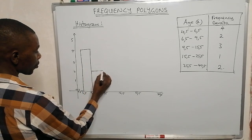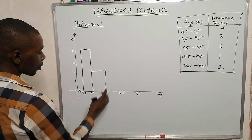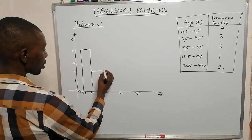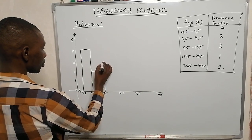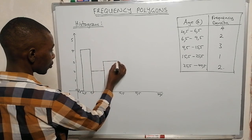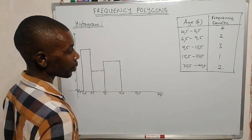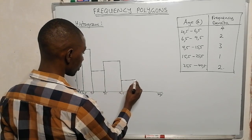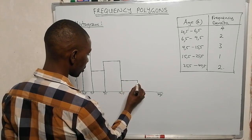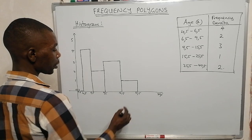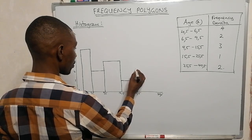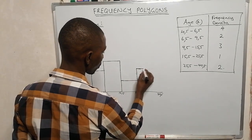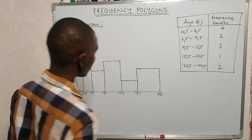The bar heights are: 4.5–6.5 gets 4 units; 6.5–9.5 gets 2 units; 9.5–15.5 gets 3 units; 15.5–25.5 gets 1 unit; 25.5–40.5 gets 2 units. Use your ruler to construct these bars.